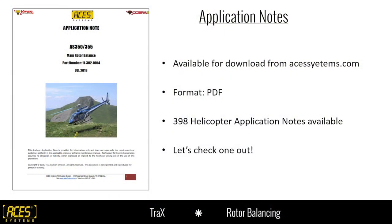These are available on the website once you register. You can't register until you buy a new system. Once you become an ACES customer, you get logged into the system and have access to all the app notes, setups, and technical advice. It's in PDF format, so you can download it, put it on a USB stick, carry it around, view it on any computer, and print it out. We have about 398 different application notes available covering main rotor, tail rotor, and driveshaft — we cover pretty much everything that's out there.